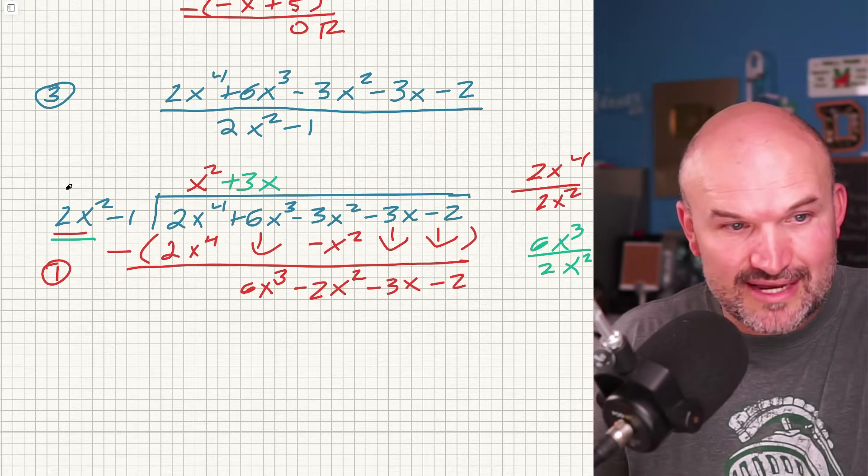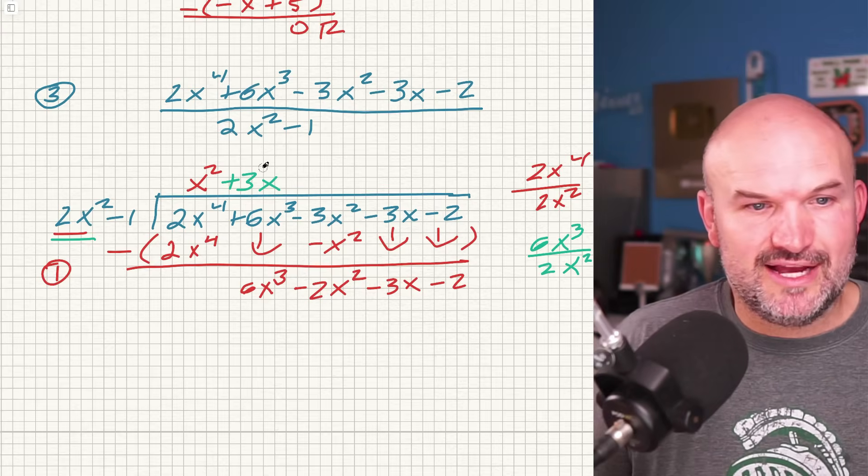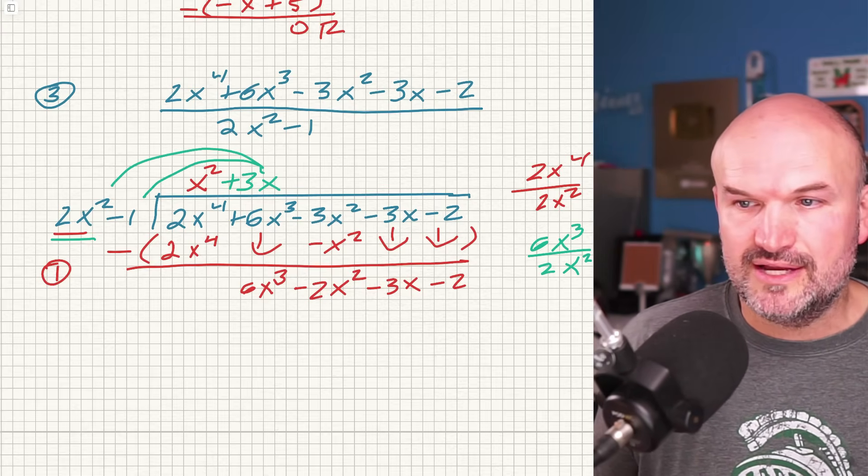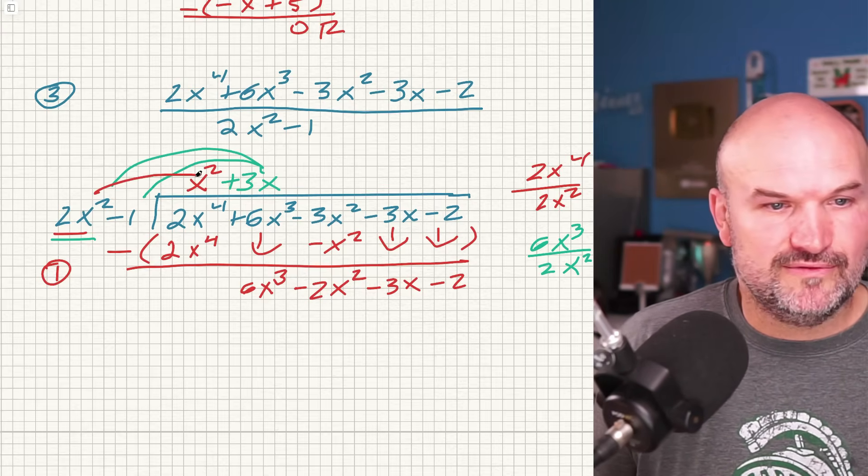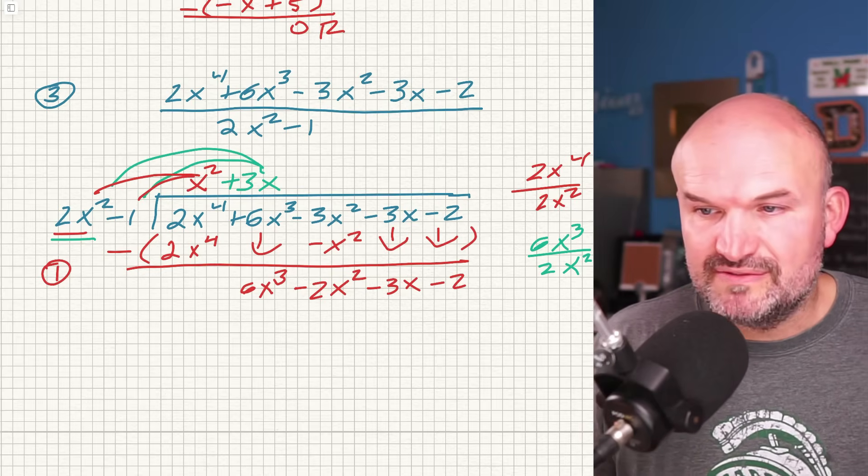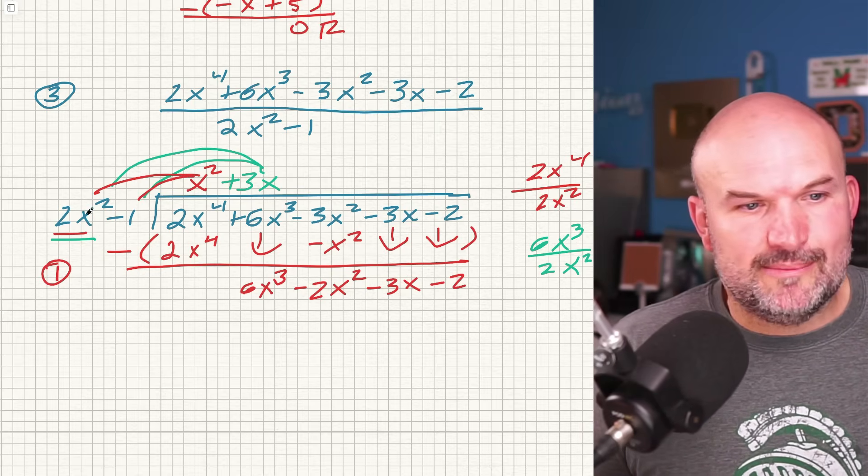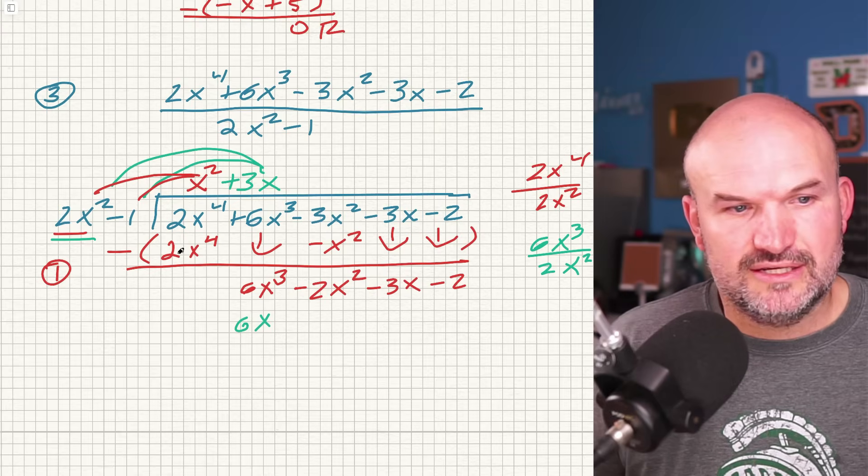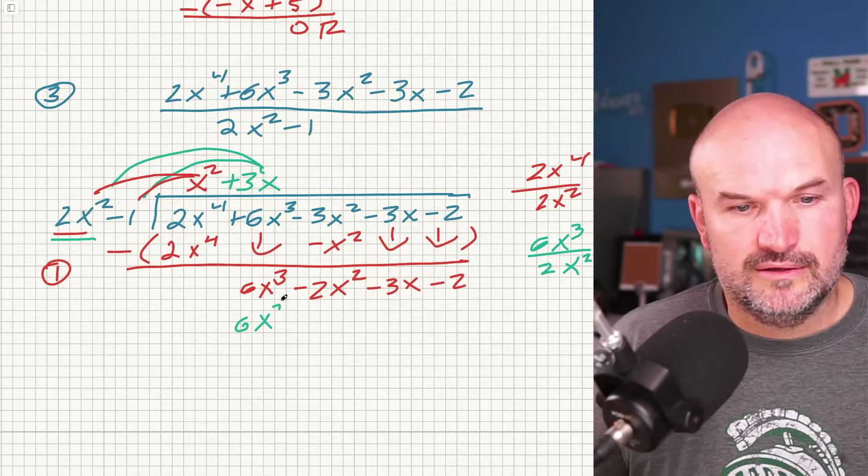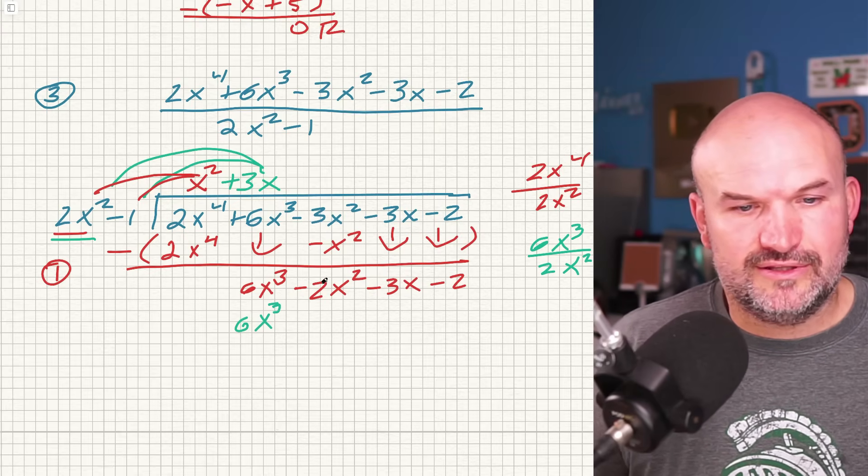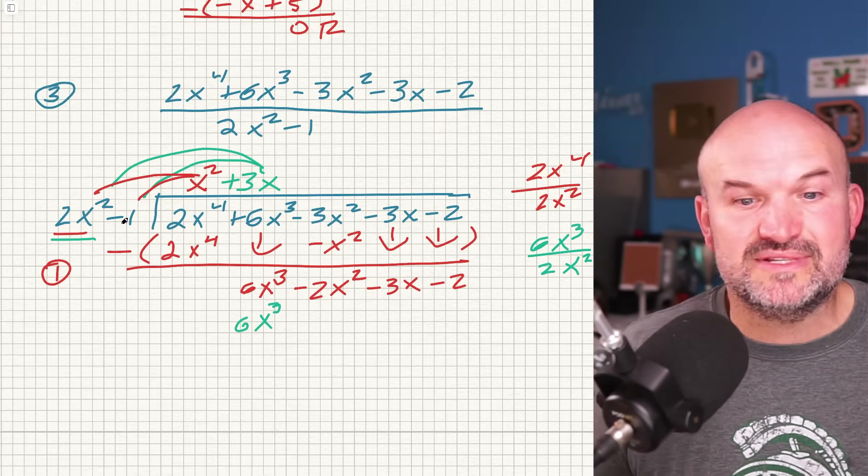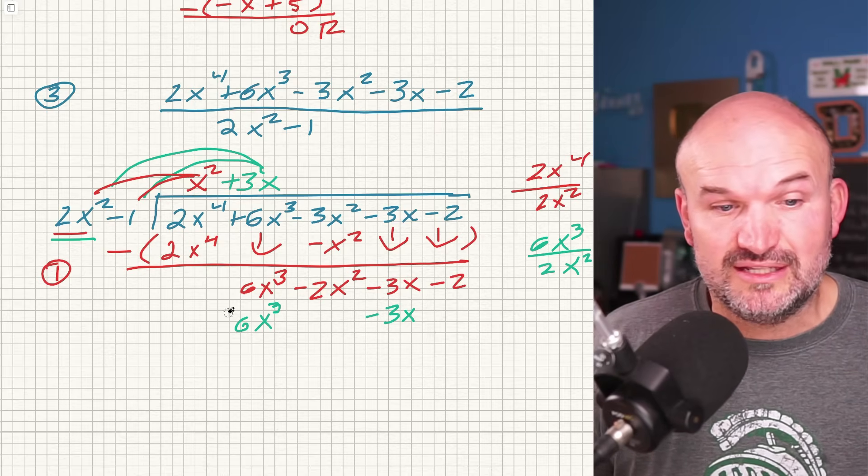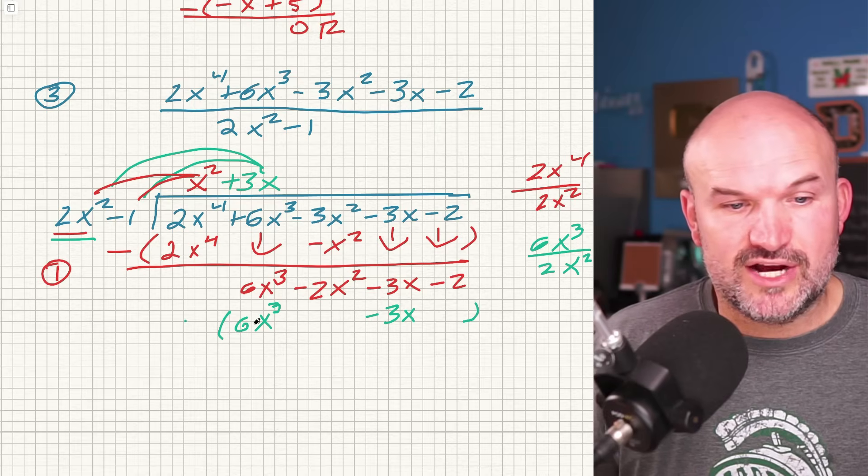Now take this 3x and multiply by both of these terms. I actually should show that with the red because that's what I did with the red. So let's just do that. Multiply by both of them. That's what I did in the previous step. All right. So I multiply 3x times everything there. I'm going to get 6x cubed, and that doesn't look like a three, but there we go. And then 3x times negative one is negative 3x. And again, I don't have anything for the x squared, so I'm just going to leave it off.